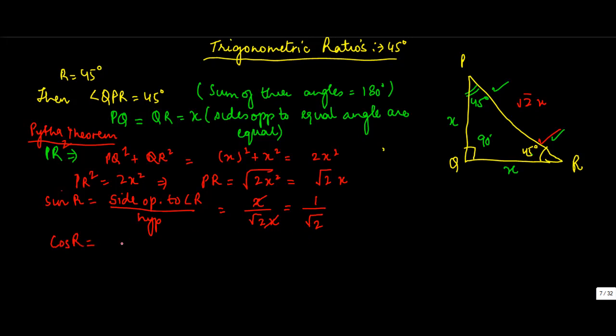Cos R is equal to QR, which is the side adjacent, upon hypotenuse, or X upon root 2X, again 1 upon root 2. So tan R is equal to sin R upon cos R, which is 1 upon root 2 divided by 1 upon root 2. These cancel with each other, equals to 1.